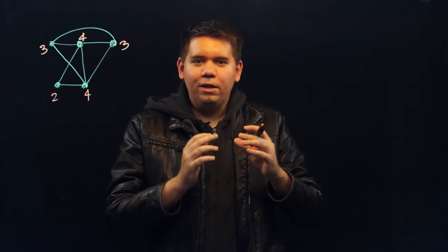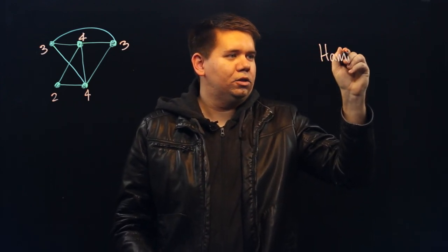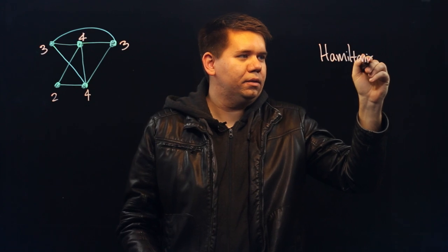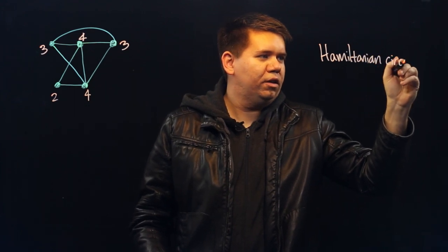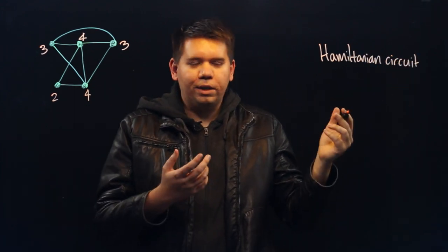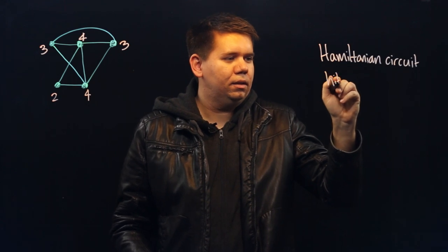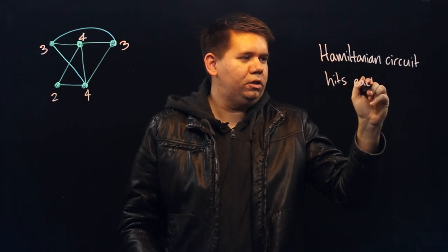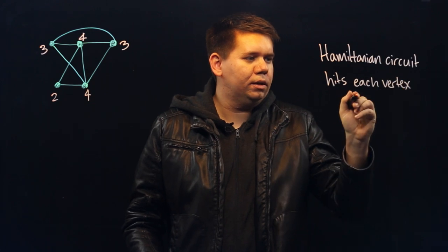This is called, instead of an Eulerian circuit, a Hamiltonian circuit. So a Hamiltonian circuit is a circuit that hits each vertex once.